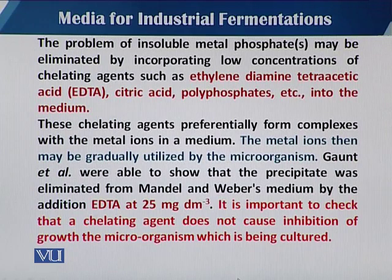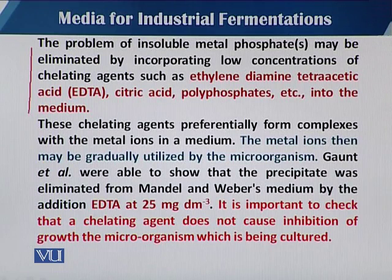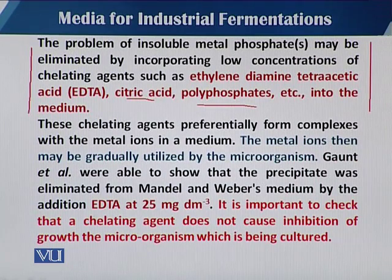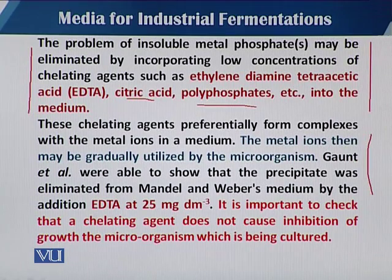In that case, we use chelating compounds. You can see here different examples of chelating compounds: ethylene diamine acetic acid (EDTA), citric acid, and polyphosphates, which are mostly added at very low concentrations in the medium and act as chelators. These chelating agents preferentially form complexes with the metal ions in the medium and hinder their negative effect on growth and availability, because in the presence of those metal ions the enzymatic system of the organism will be affected.